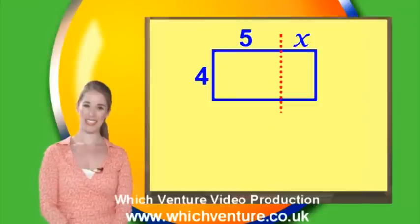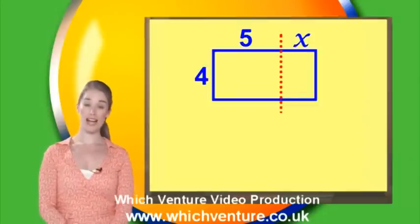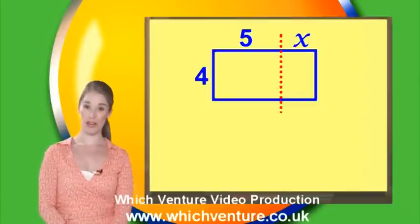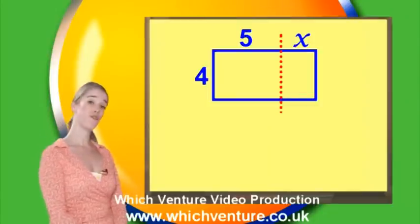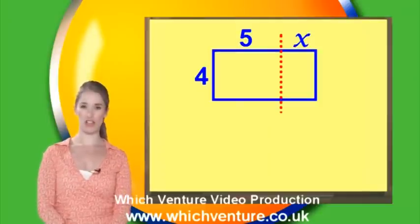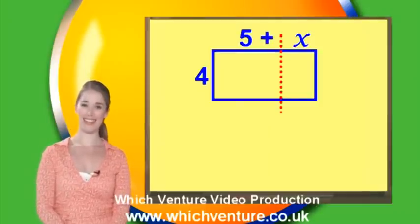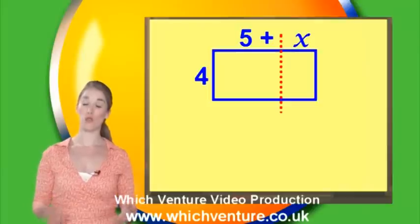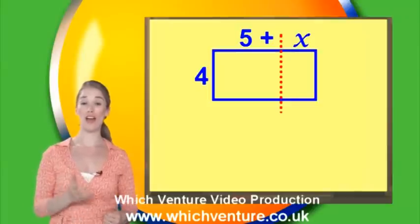Okay, how did you get on? To find the area of a rectangle, we multiply the length by the width. Here the width is 4, and the length is given by the expression 5 plus x. So the area of the rectangle would be 4 lots of 5 plus x.